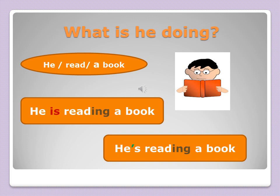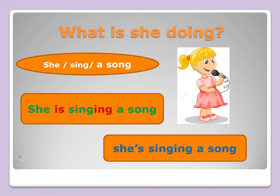So the first example: what is he doing? I'm going to give you examples and you will deduce the rule by yourself. He reads a book — he is reading a book. The verb uses the auxiliary 'is' and adds 'ing' to the verb 'read'. This is the present continuous. Another example: what is she doing? She is singing a song.